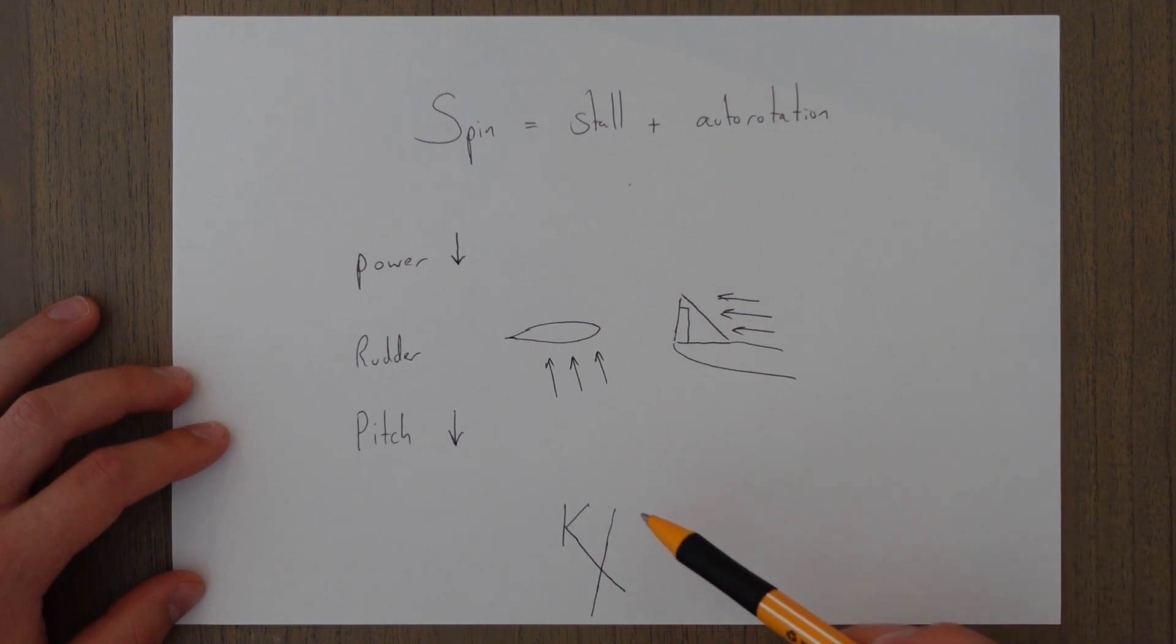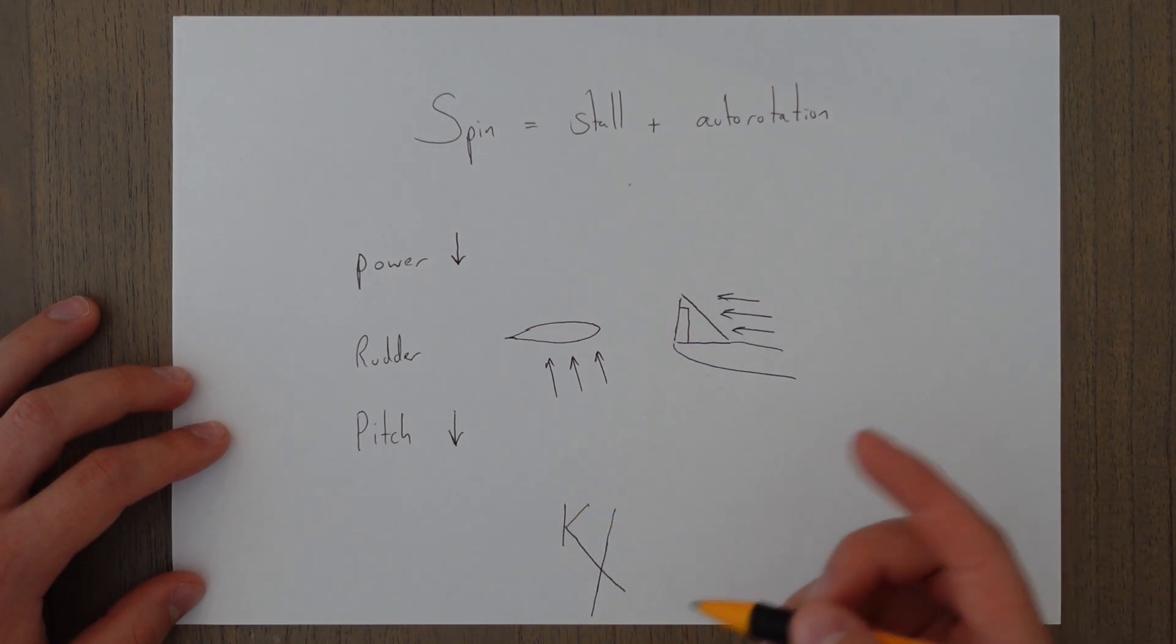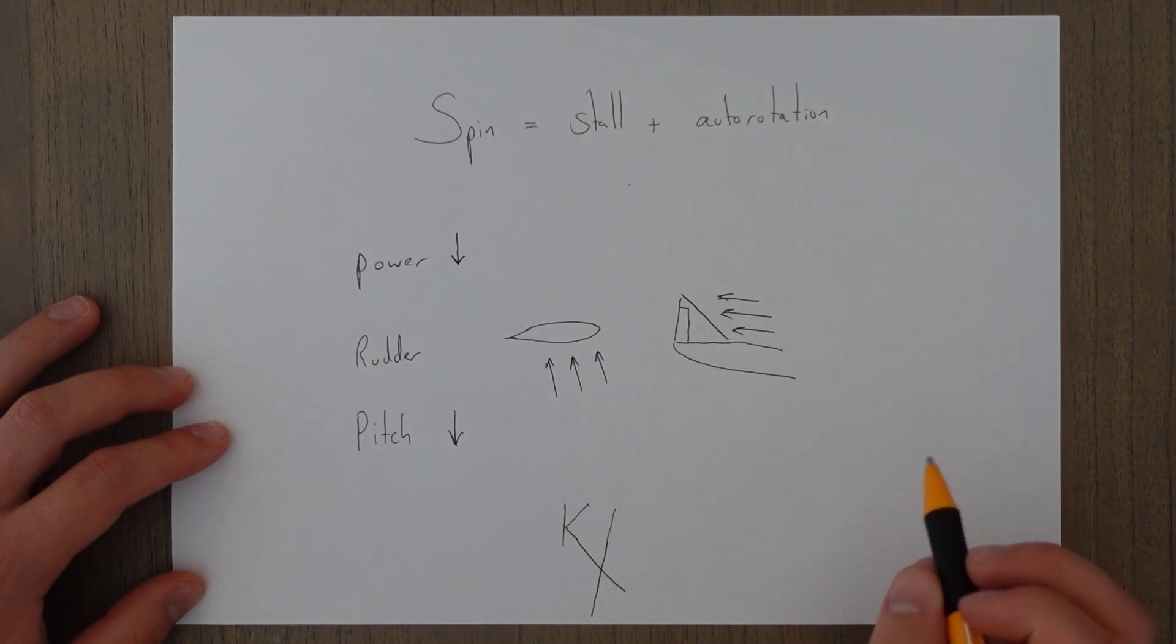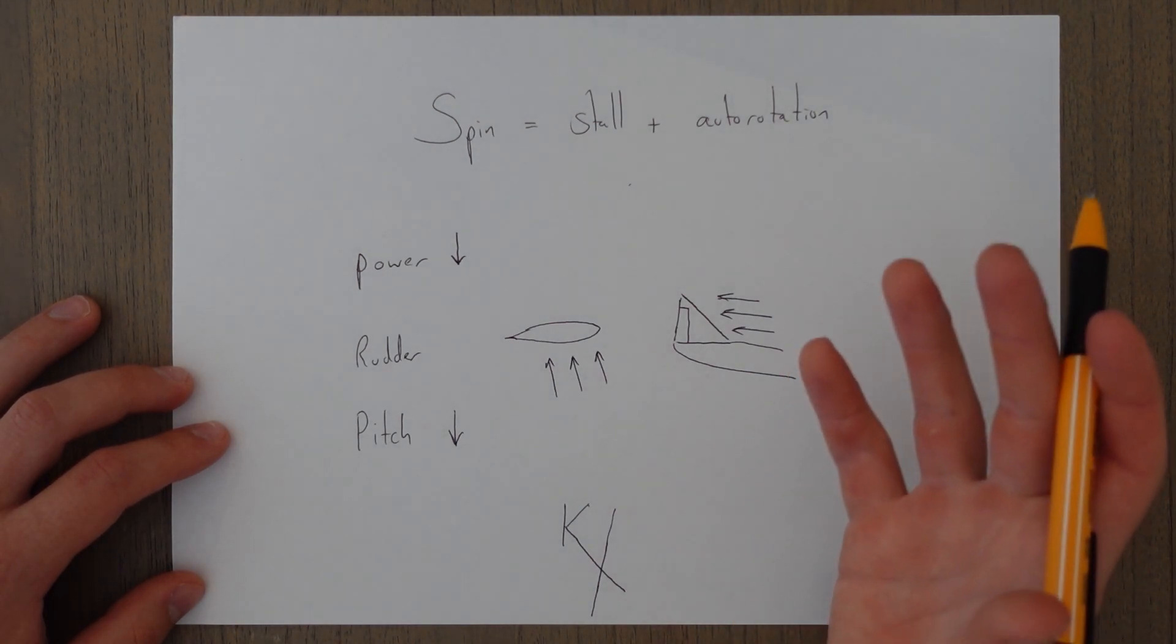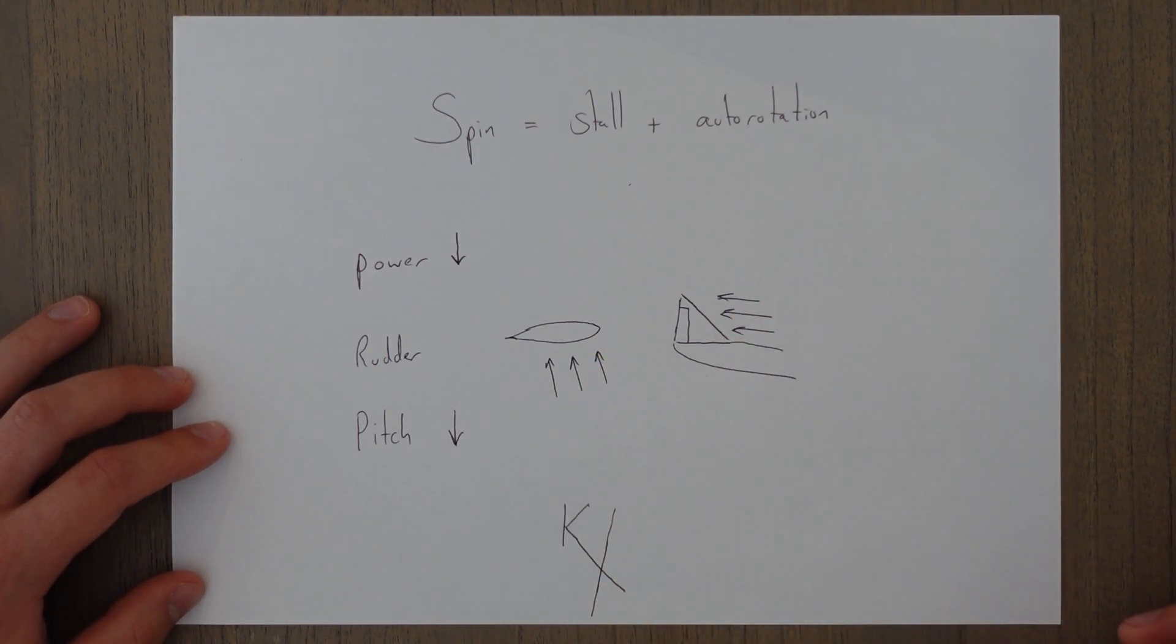An important thing to note is that when you recover from the stall you'll be on a very nose down attitude. So it's important not to pull back too hard on the controls because that will increase the load factor a lot and as we saw in the last class if you increase the load factor then the stall speed will go up so you could actually stall again by pulling back too hard.